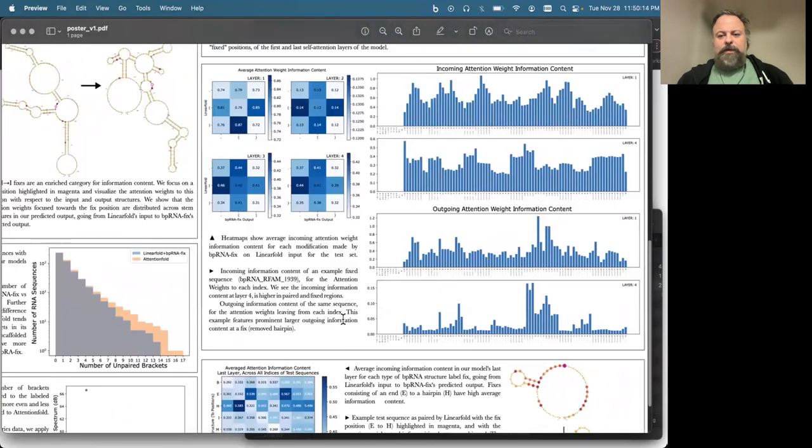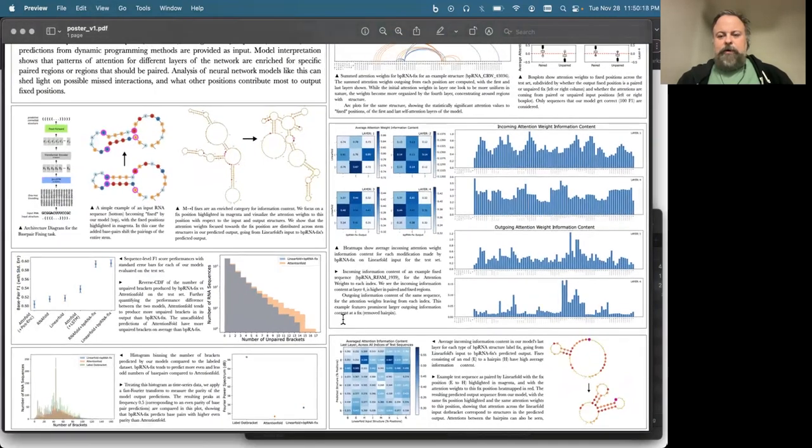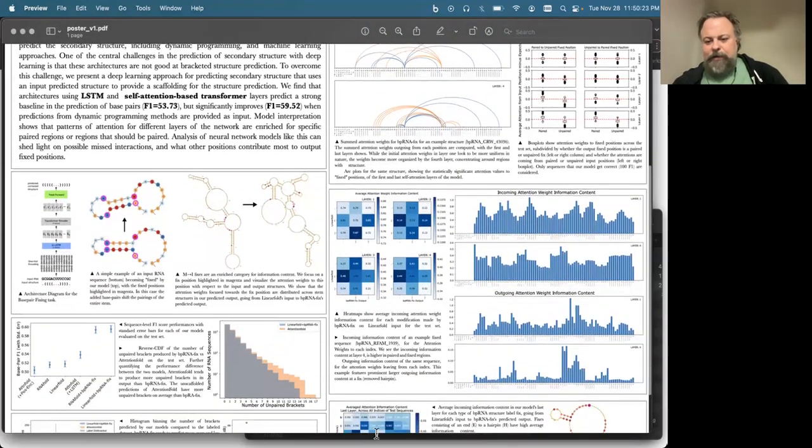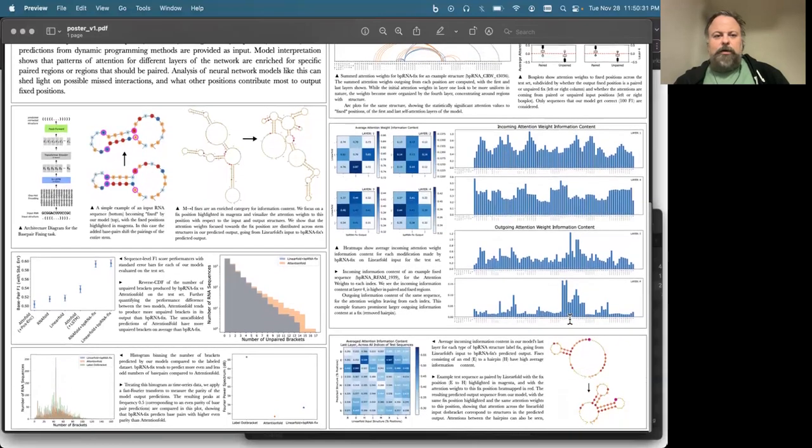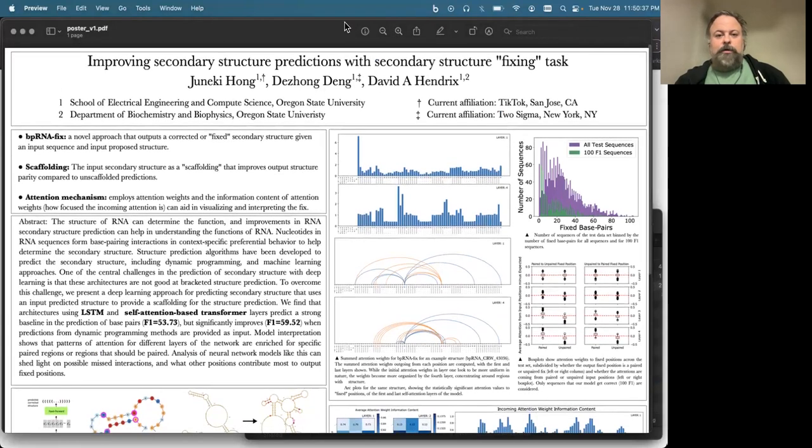We also use attention and information content defined from attention weights to improve the interpretation of our network, and we see patterns such as the fixed positions tend to have either high outgoing or incoming attention information content. And thank you for taking a look at our poster. See you at the poster.